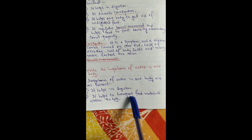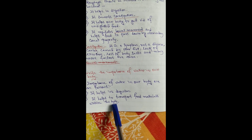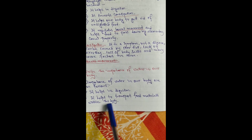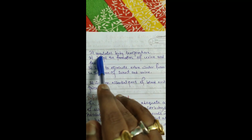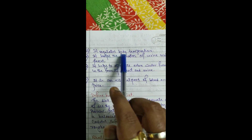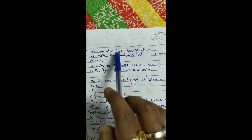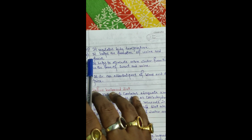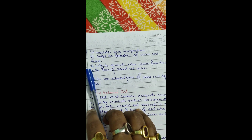Second, water helps to transport food materials within the body — from one place to another. Third, it regulates body temperature. If you do not drink sufficient water, your body temperature may fluctuate. If you take an adequate amount of water every day, it will regulate your body temperature properly.